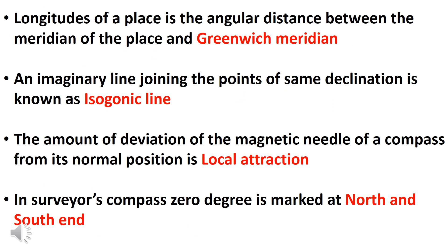Longitude of a place is the angular distance between the meridian of the place and the Greenwich meridian. We discussed what meridian means in class.